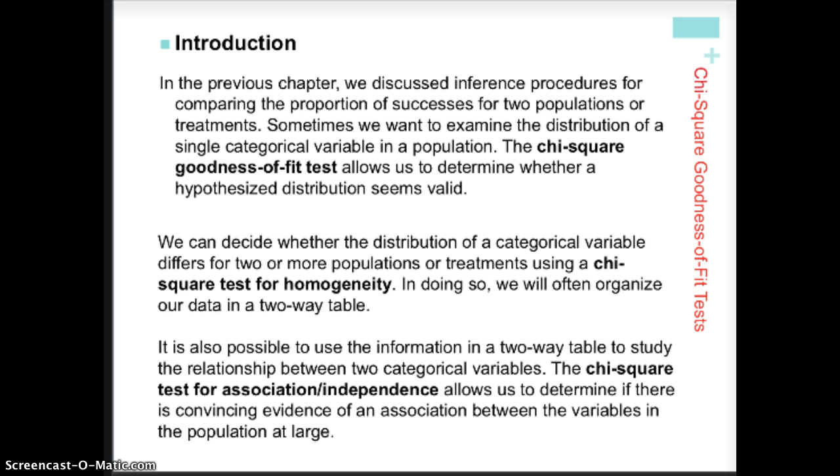So we can decide whether the distribution of a categorical variable differs for two or more populations or two or more treatments, and that's referring to an experiment running two treatments, by using a chi-square test for homogeneity. So goodness of fit is does it go along with what it's supposed to be?